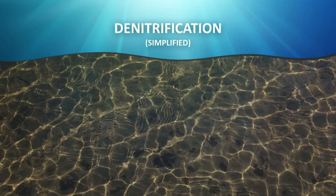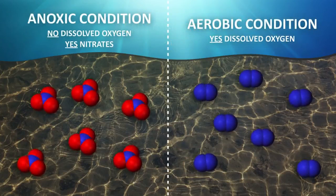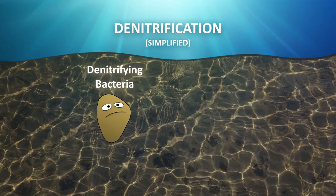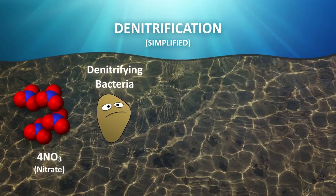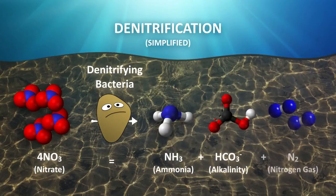Denitrification is the final biological process in a controlled aerobic digestion process. Denitrification is accomplished in the absence of oxygen. This forces the biomass to oxidize 4 moles of nitrates, which is reduced to ammonia, bicarbonate, which is a form of alkalinity, and 2 moles of nitrogen gas.